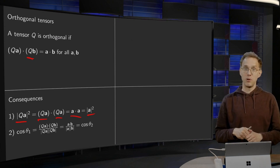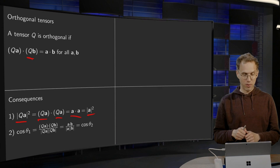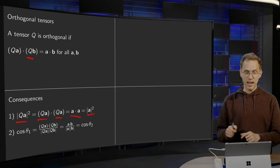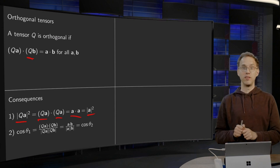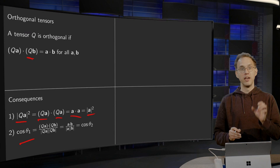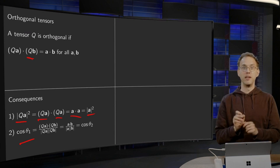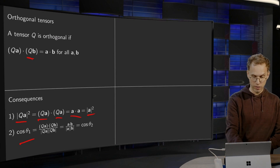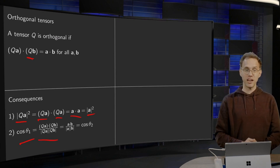Furthermore, let us look at the angles: angle θ₁ between Qa and Qb, and angle θ₂ between a and b. We know that the cosine of this angle is (Qa)·(Qb) divided by the lengths of Qa and Qb. This is a formula from linear algebra.